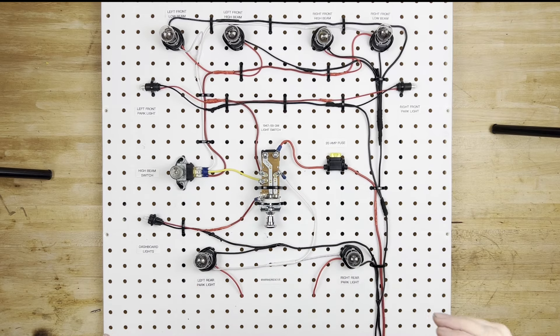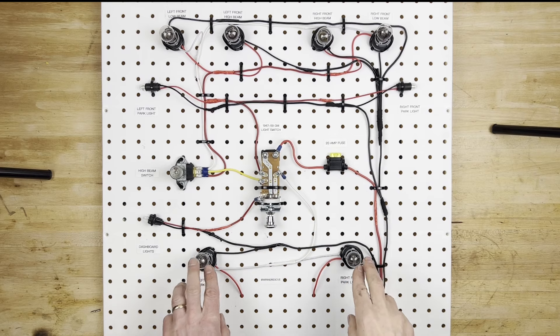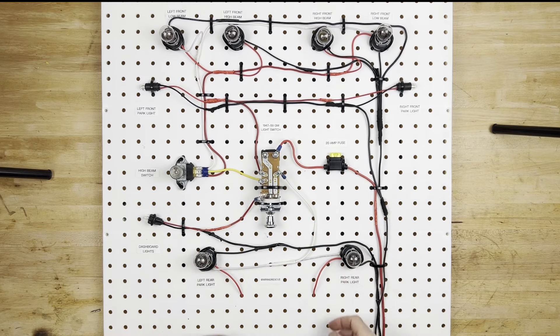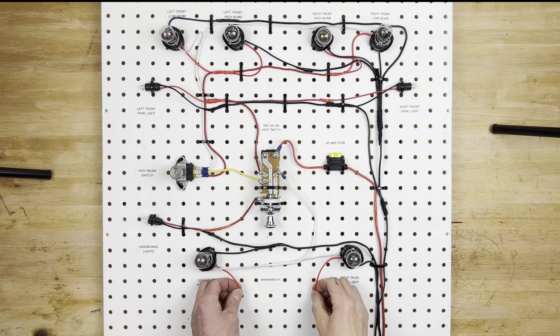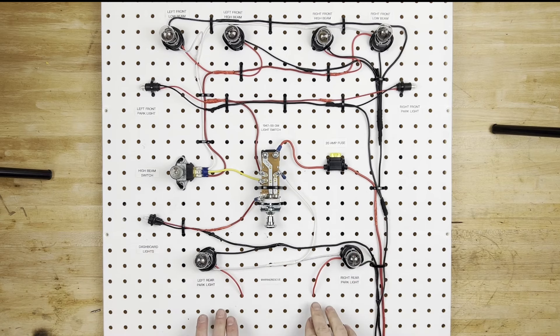Now these lights are 2057 style bulbs, which have two filaments each. You can see these red wires are not being used for anything, but in a normal situation, you might use those for maybe your brake lights or your turn signals.